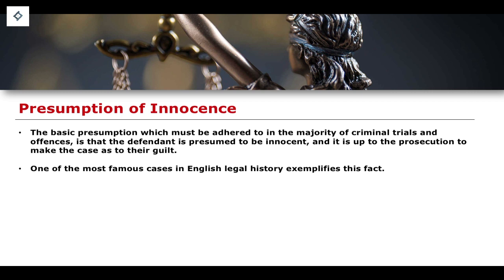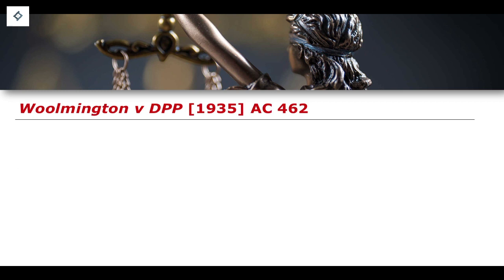One of the most famous cases in English law exemplifies this. This is the case of Woolmington v Director of Public Prosecutions from 1935. We're going to explain the facts of this case, the major defence that was levied, and then talk about how the presumption of innocence and burden of proof was enshrined through it. This isn't where the burden of proof originated as a precedent, but it is an example of where the DPP tried to reverse the onus onto the defendant, and the courts made it very clear that is not the purpose of the common law criminal jurisdiction.